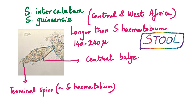Lastly, two species reported only from Central or West Africa: Schistosoma intercalatum and Schistosoma guineensis. The eggs are elongated with a terminal spine, similar to Schistosoma haematobium, but these eggs are found in the stool. You can appreciate a central equatorial bulge in the eggs of these two species, and they are also slightly longer — 140 up to 240 microns in size.